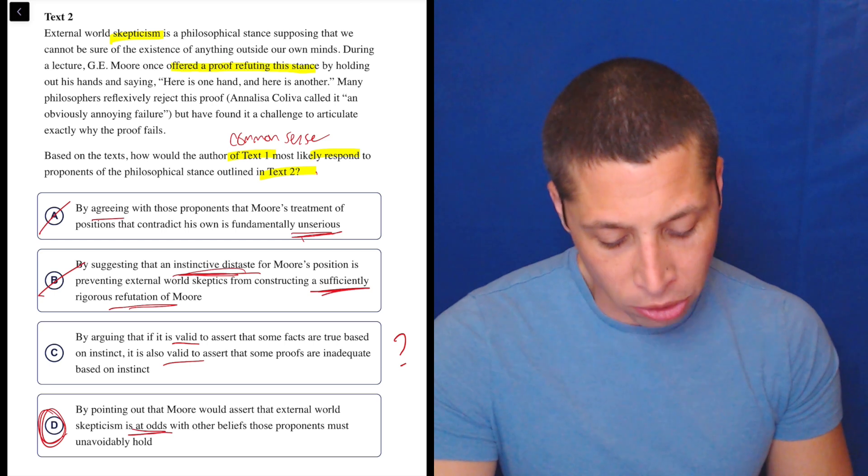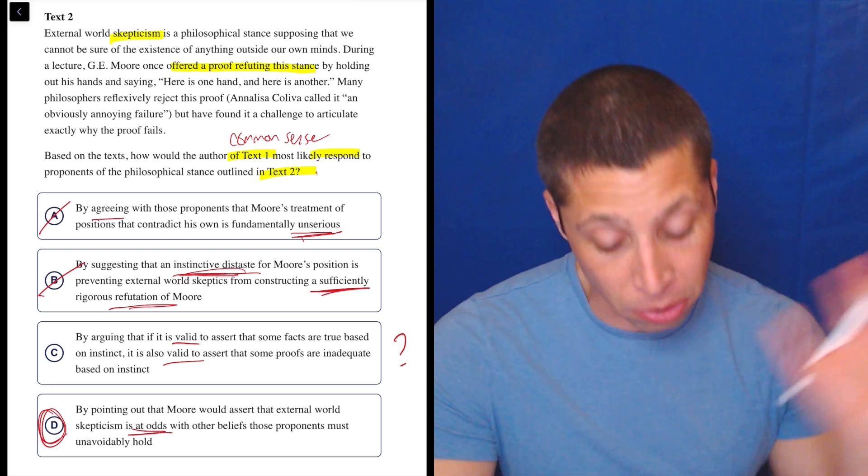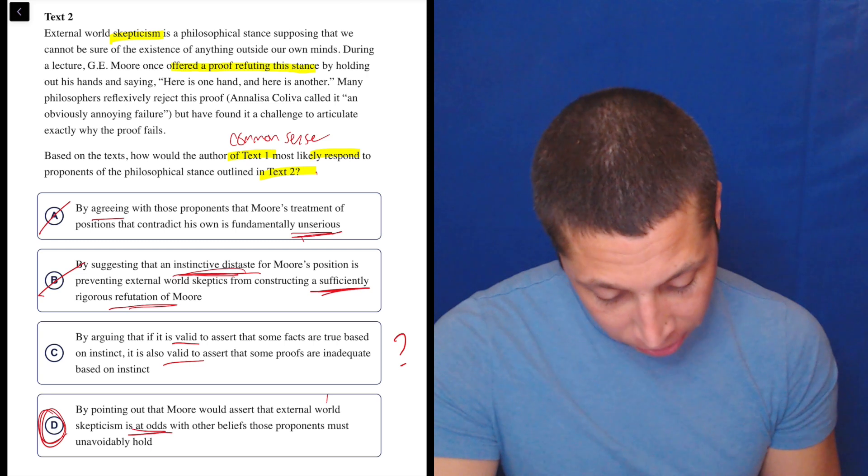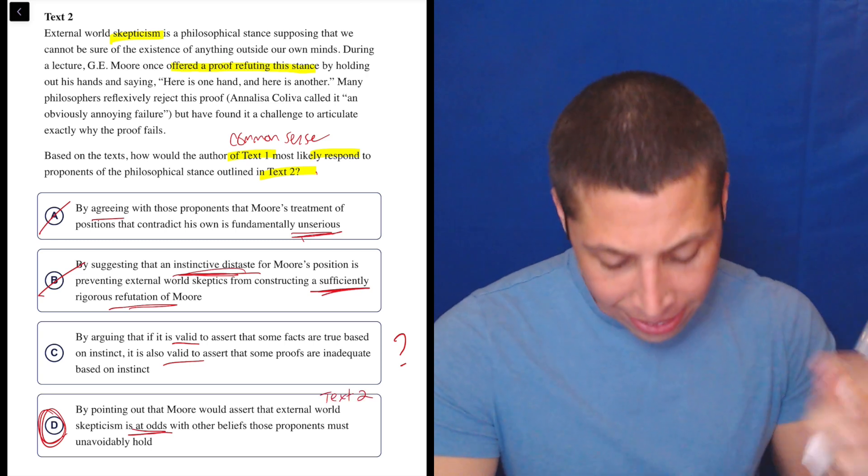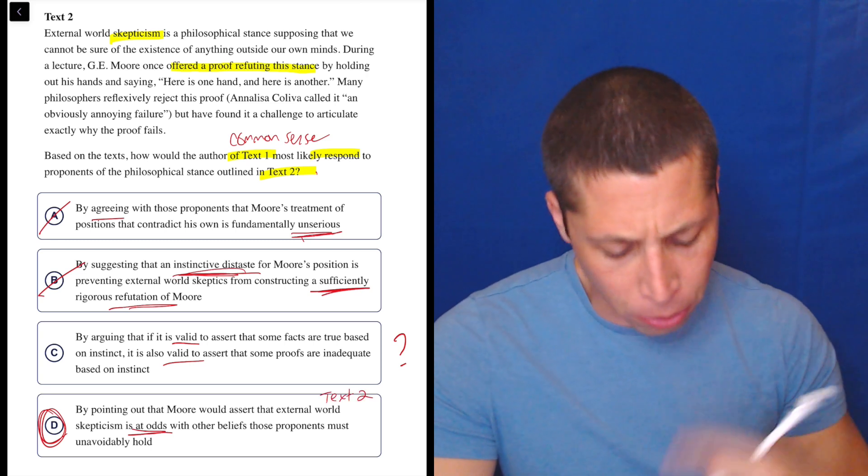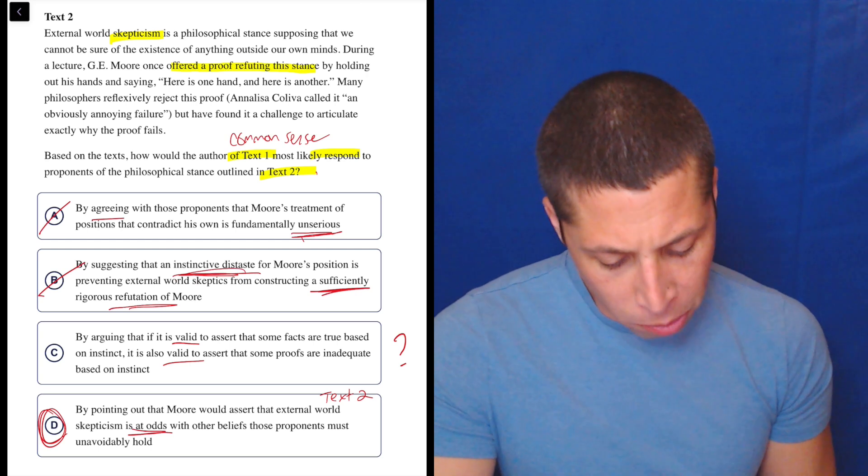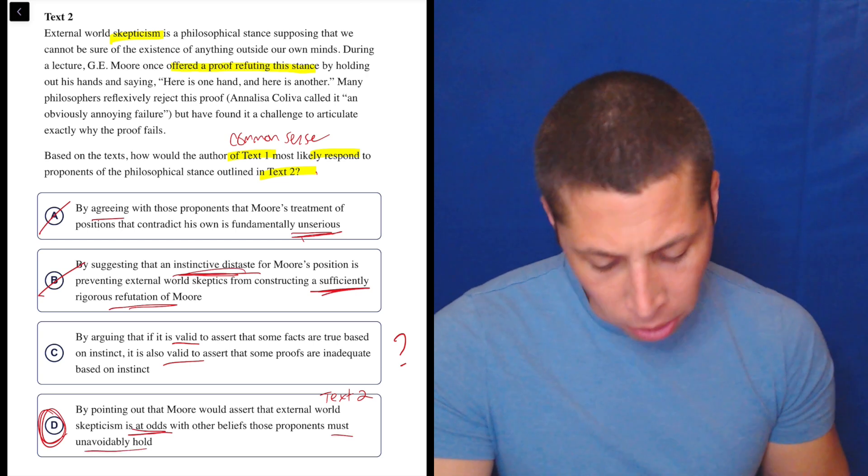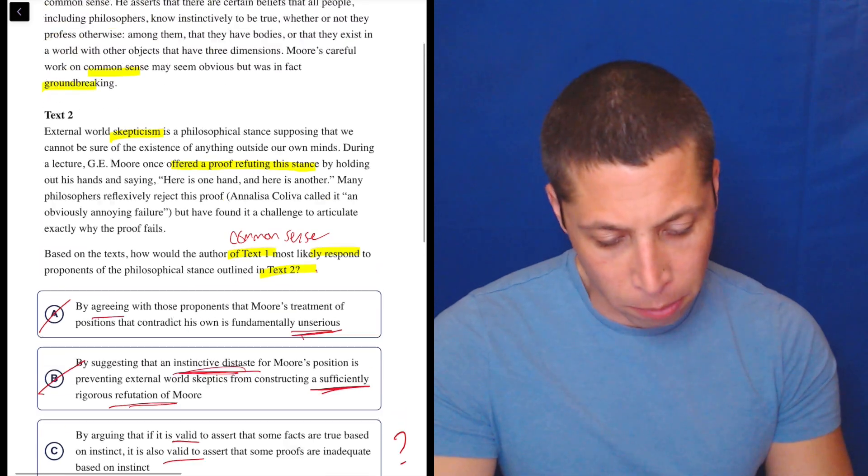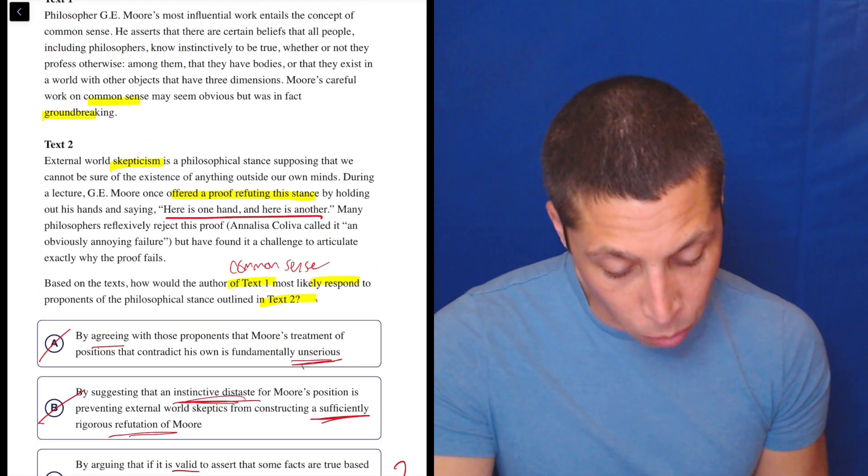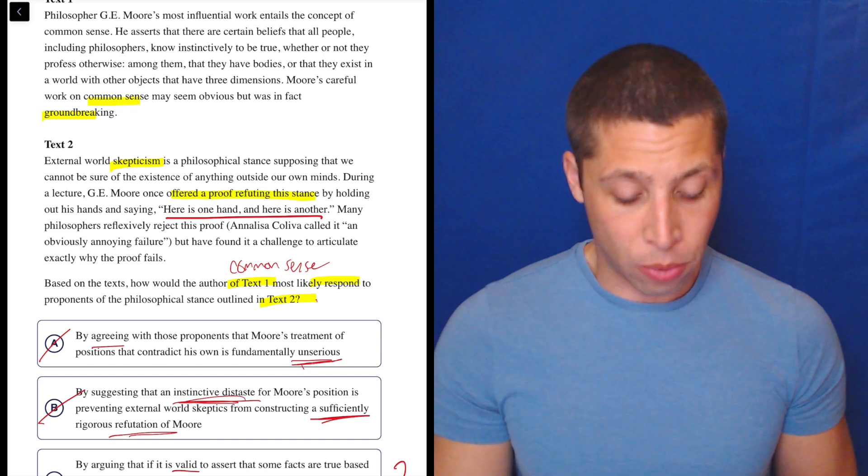I mean, I guess I should try to prove it, but let's see. By pointing out that Moore would assert that external world skepticism, so that's the thing talked about in text 2, so 2, right? So text 2 is at odds with other beliefs that the people who believe whatever text 2 is saying must unavoidably hold. Well, what would those beliefs be? What are those beliefs, right, that they must unavoidably hold? I guess something like what they quoted here. Here is one hand and here is another, right?